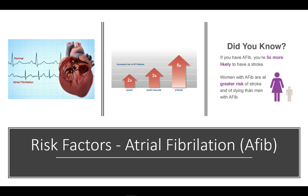An estimated 15% of strokes are a result of untreated atrial fibrillation, known as AFib. But most people don't know what AFib is, much less know if they have it. AFib occurs in an estimated 2.7 million Americans and is the most common type of irregular heartbeat. AFib dramatically increases the risk of stroke, approximately five times over the general population.